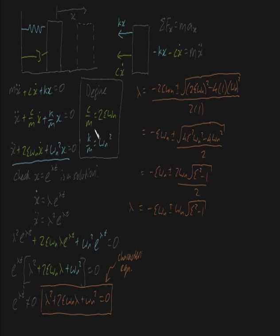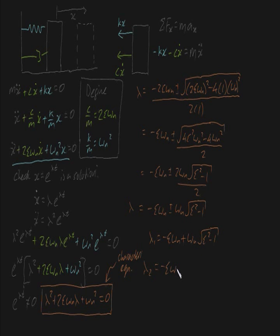Now you may have guessed that this means there are two values of lambda. One of which I'll call lambda 1, which is minus zeta omega n plus omega n times the square root of zeta squared minus 1. And the other one corresponds to the other root, which I'll call lambda 2, which is minus zeta omega n minus omega n times the square root of zeta squared minus 1.